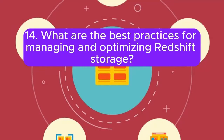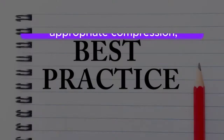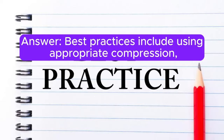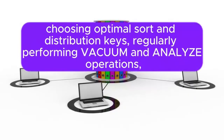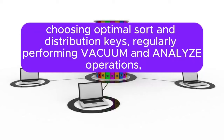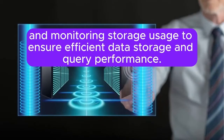Question 14: What are the best practices for managing and optimizing Redshift storage? Answer: Best practices include using appropriate compression, choosing optimal sort and distribution keys, regularly performing VACUUM and ANALYZE operations, and monitoring storage usage to ensure efficient data storage and query performance.